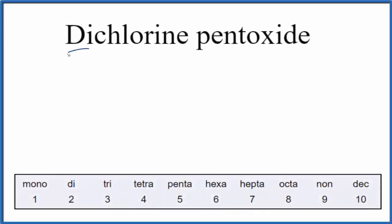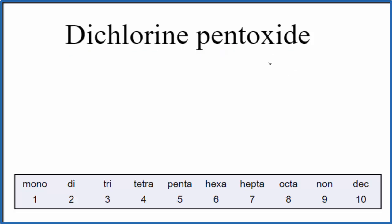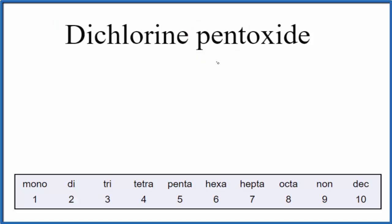Let's write the formula for dichlorine pentoxide. We know that this is going to be a molecular compound for two reasons. One is it has these prefixes here, so that means we have a molecular compound. The second thing is we have chlorine and oxide, which is oxygen — these are two nonmetals. So this is a molecular compound.